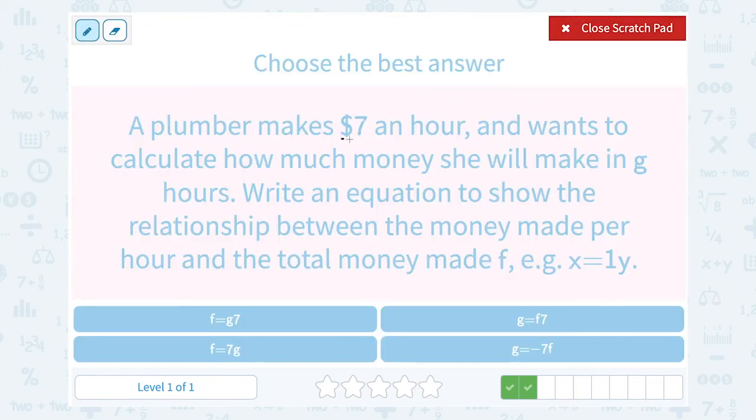Okay, well, if you're getting $7 an hour, you would multiply that by the number of hours you worked, right? For one hour, 7 times 1. For two hours, 7 times 2. So if she worked G hours, we would say 7 times G.